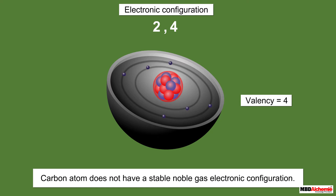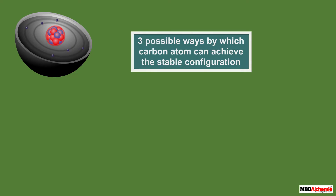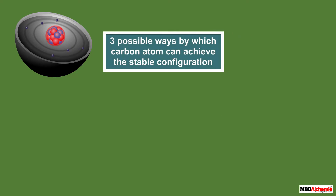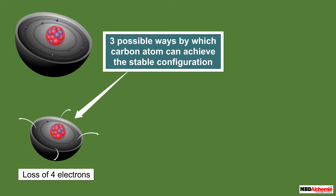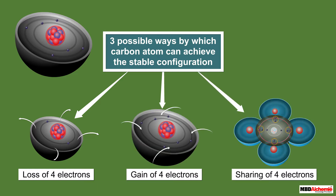A carbon atom does not have a stable noble gas electronic configuration. The presence of four electrons in its valence shell suggests that there are three possible ways by which a carbon atom can achieve a stable configuration. These include the loss of four electrons, the gain of four electrons, and the sharing of four electrons.